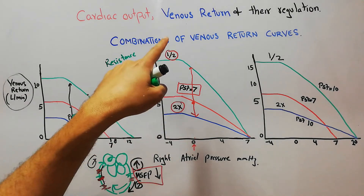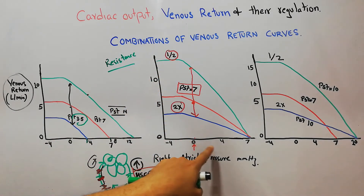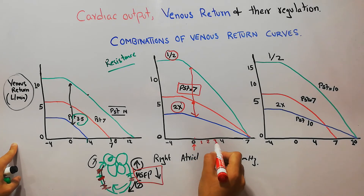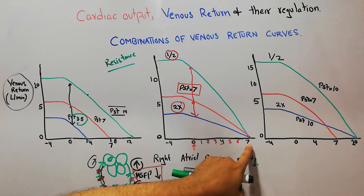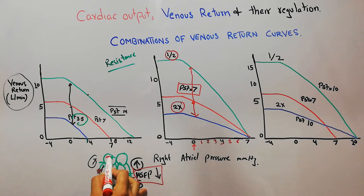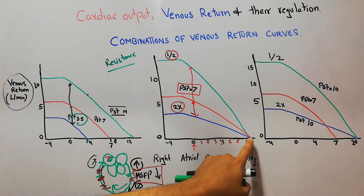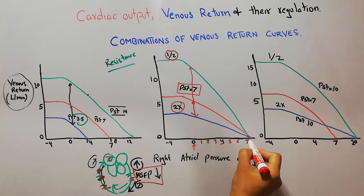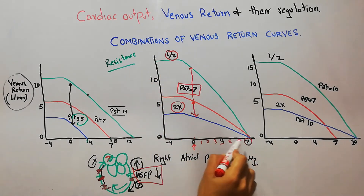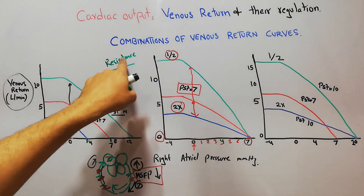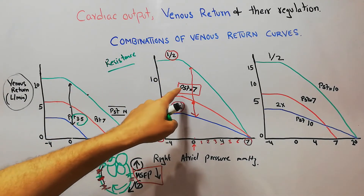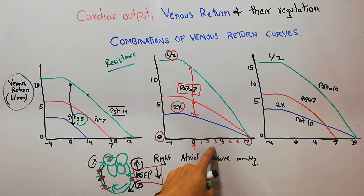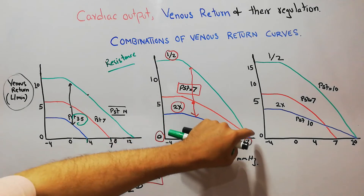The venous return will change at every level of right atrial pressure — at levels one, two, three, four, five, six. But at the level of seven mmHg, if the right atrial pressure reaches seven, the venous return will ultimately come down to zero. Whether the resistance is half, normal, or doubled — if right atrial pressure starts increasing, venous return will ultimately become zero at that level.